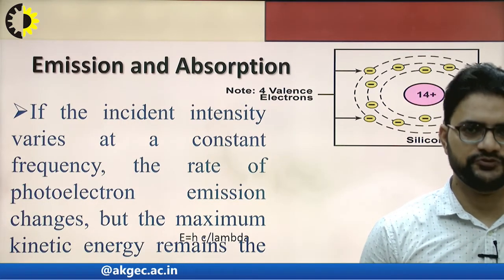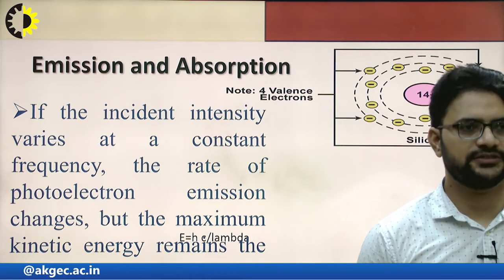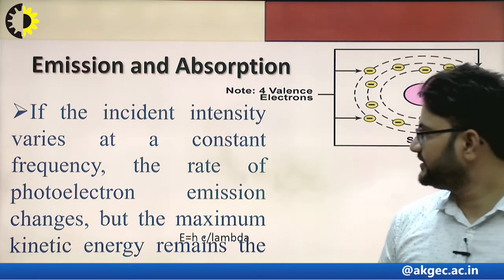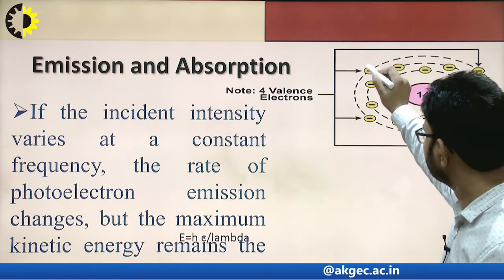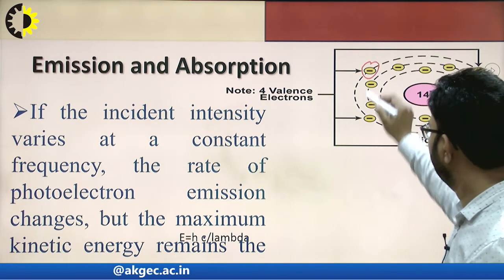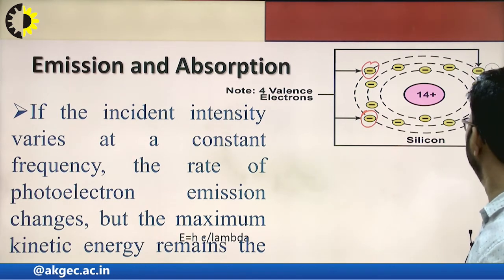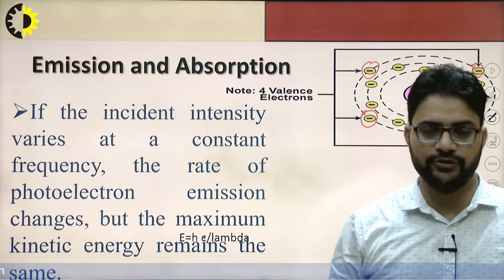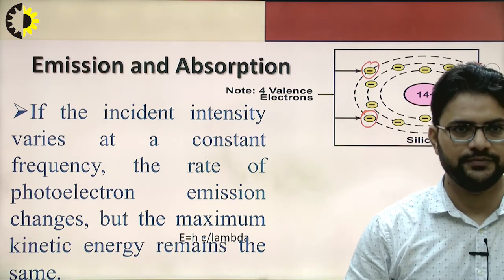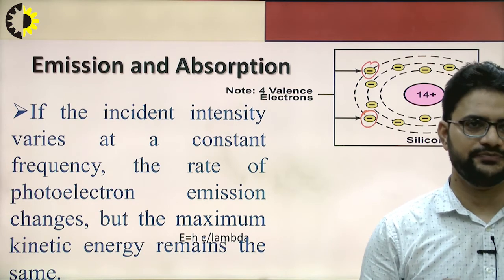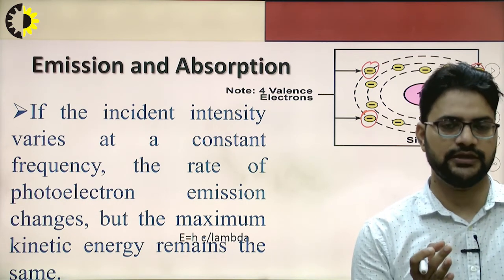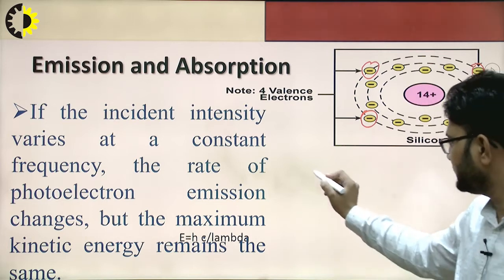Next is emission and absorption. If we consider a silicon material, it consists of four electrons in the outer shell. After gaining energy, these four electrons will be emitted from the silicon surface. This is called emission. These electrons gain energy and move from the valence band towards the conduction band, which has the higher energy level.